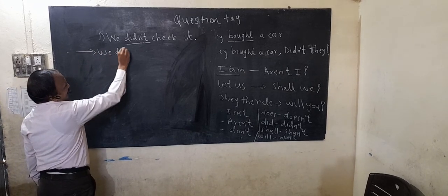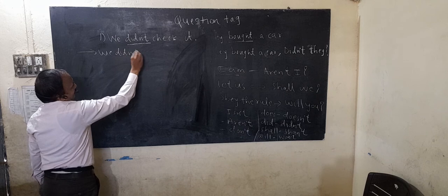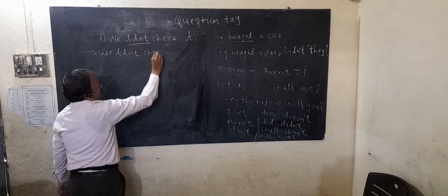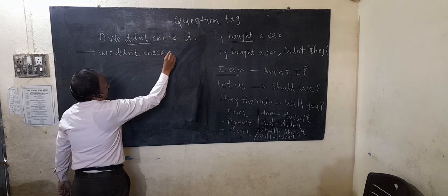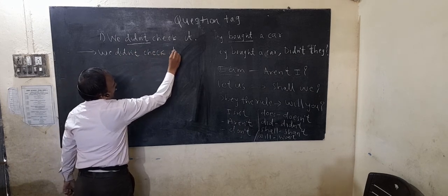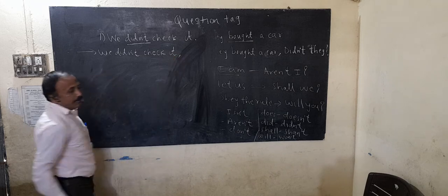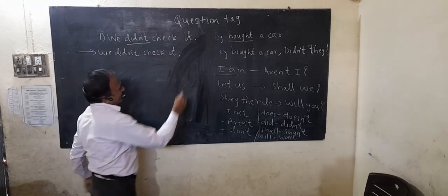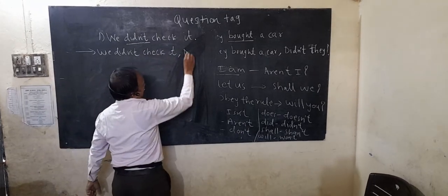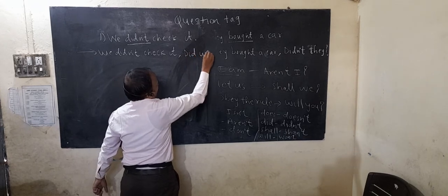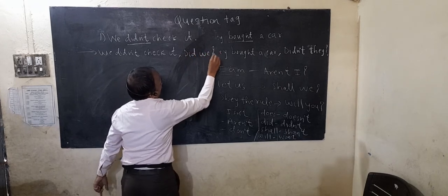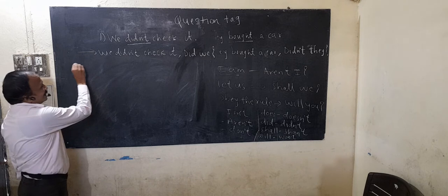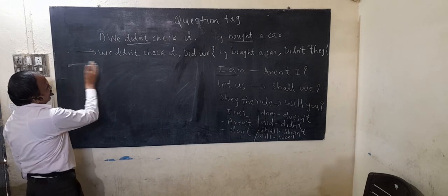For example: 'We didn't check it,' — this statement is negative, so the question tag comes positive. 'Did' becomes 'did', so the question tag is 'did we?' Let us take another example.